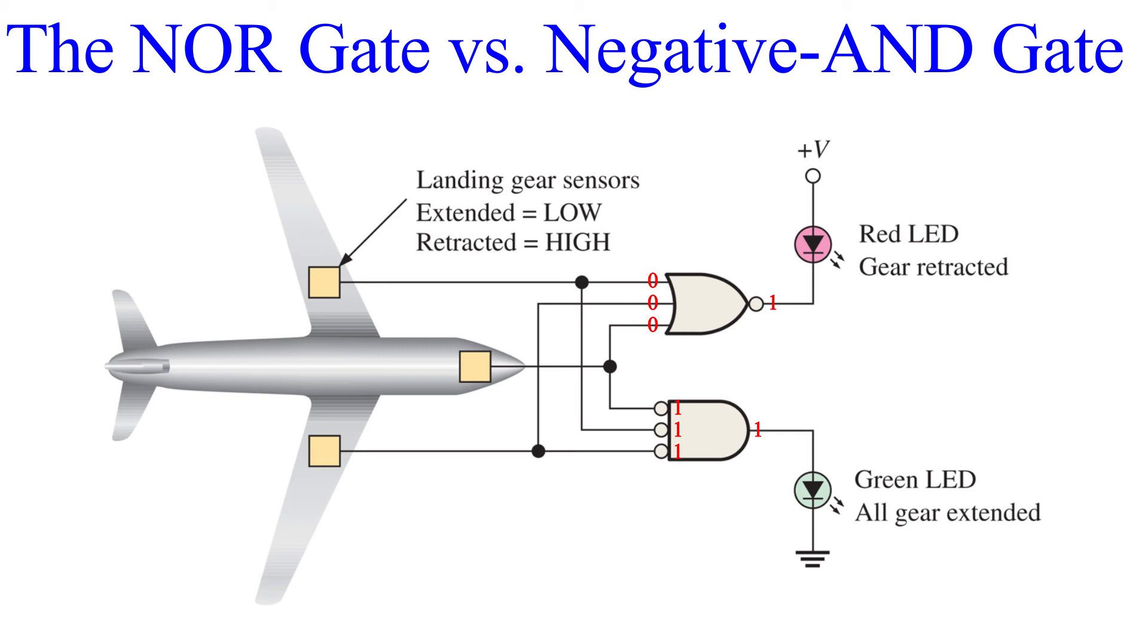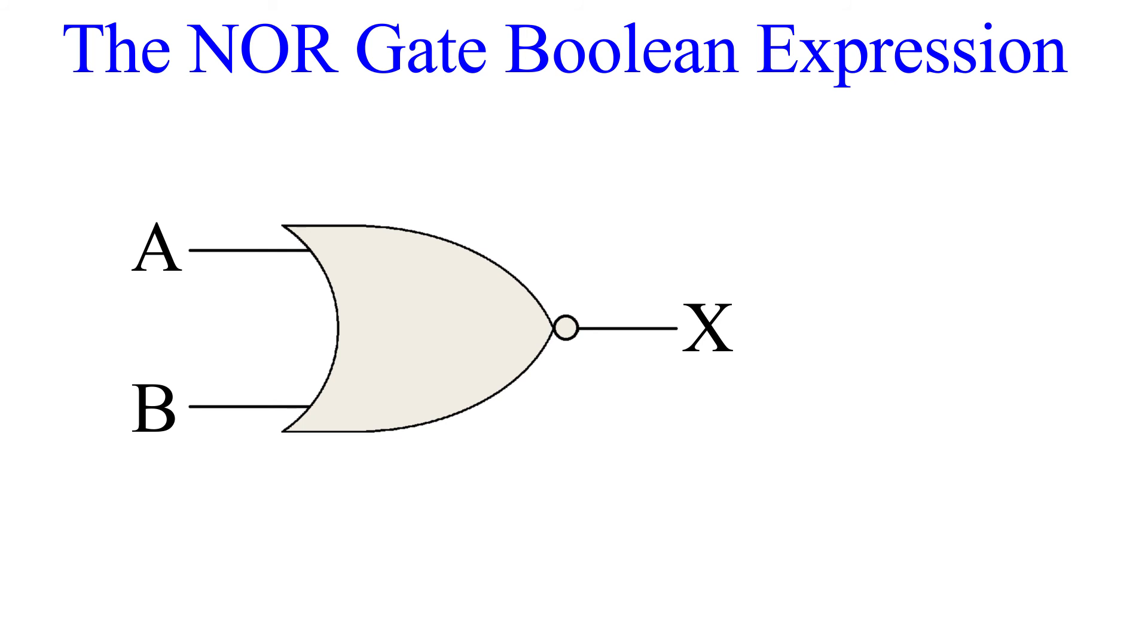That leaves us with only the Boolean expression. If you've seen the previous video from this section on the NAND gate, you may be able to surmise the Boolean expression for yourself. Unlike the NOT, AND, and OR gates, the NOR gate does not use one of our traditional arithmetic symbols. Instead, like the NAND gate, it is a combination of NOT and OR. We apply the OR operation to the inputs. Here it is: A and B as usual. Then we negate it by placing the inversion symbol or NOT symbol over the entire expression. This is the Boolean expression for NOR.